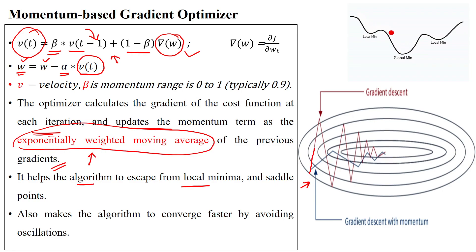Looking at the plot showing acceleration for batch gradient descent, the algorithm takes more acceleration. At a given point and angle, it goes in another direction with high magnitude to reach the next point, then comes back down again with high magnitude — so it has a large number of accelerations with high magnitude.